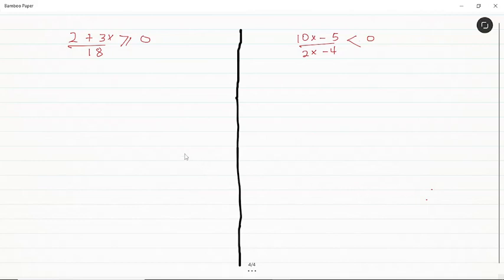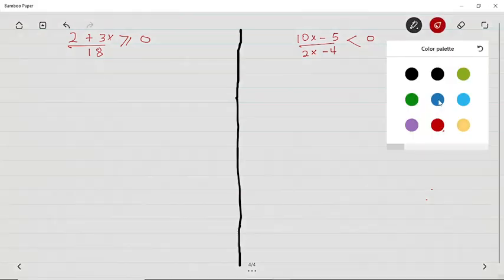If you've not yet subscribed to the channel, can we do so now? Now we have (2 + 3x)/18 greater than or equal to 0, and our second question is (10x - 5)/(2x - 4) less than 0. What we have to do is multiply both sides by the LCM to clear the denominator, then from there we get a linear equation and solve.